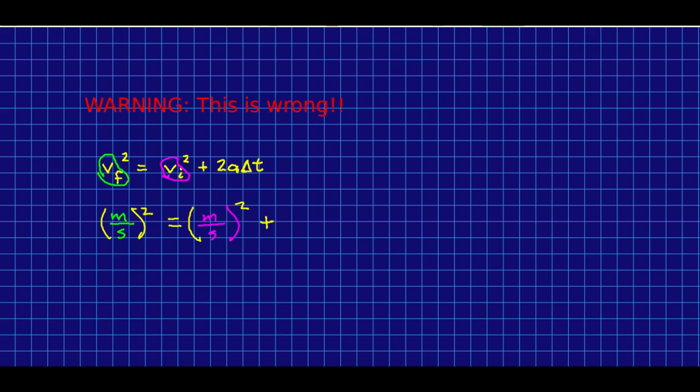So far so good. Meters per second all squared equals meters per second all squared. Things are looking fine at the moment. Now the rest. This 2 is dimensionless. We don't care. It has no units. It doesn't factor into our unit analysis. Now we have an acceleration. We know what an acceleration is. It's in meters per second squared. And that is all times a time in seconds. So look what we've got. We've got meters squared per second squared equals meters squared per second squared. So far so good. Plus, and now this seconds takes out that seconds, and we've got meters per second.